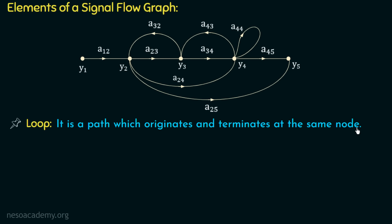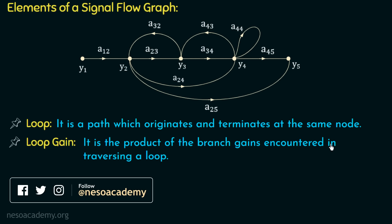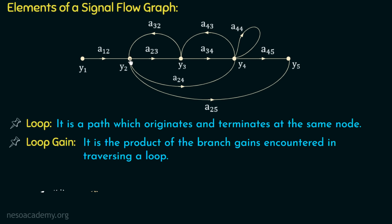Moving on to the next element: loop gain. It is the product of branch gains encountered in traversing a loop. For example, the loop gain of loop Y2→Y3→Y2 is A23×A32. The loop gain of loop Y3→Y4→Y3 is A34×A43. And the loop gain of loop Y4→Y4 is A44.